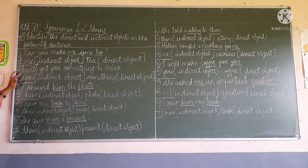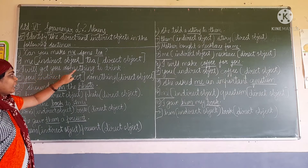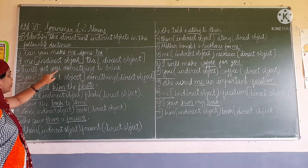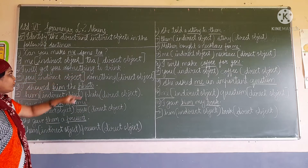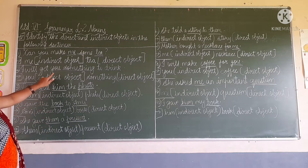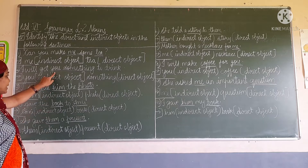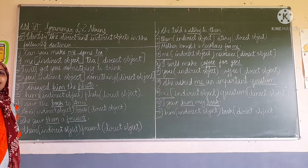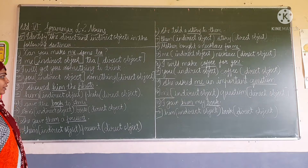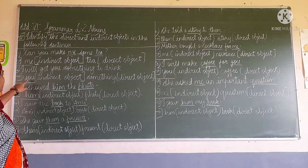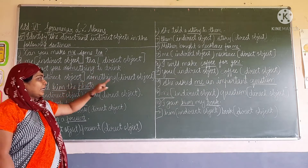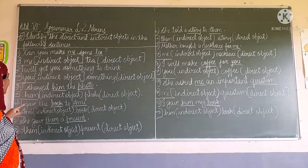Now second one: I will get you something to bring. In this sentence, 'you' is the indirect object and 'something' is the direct object. So 'you' is the indirect object, 'something' is the direct object.